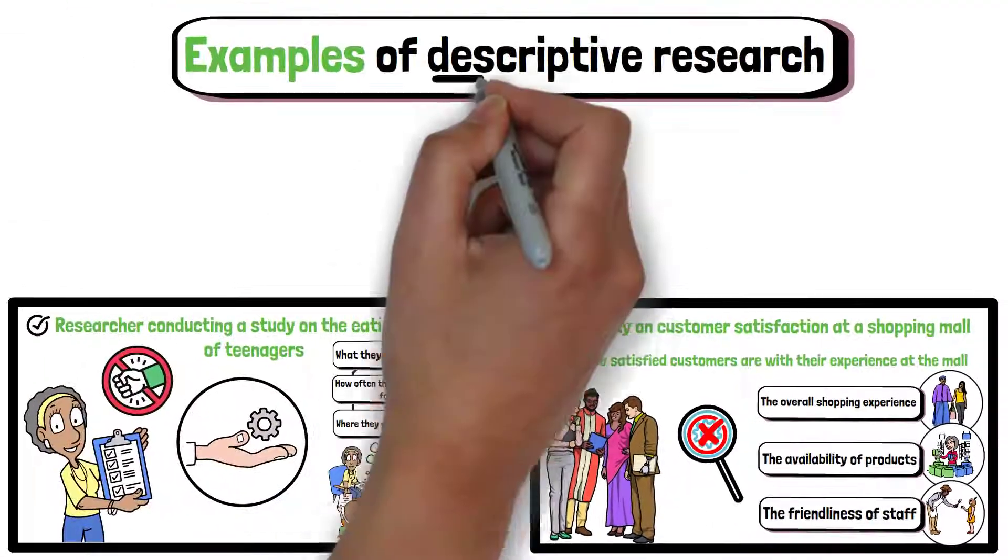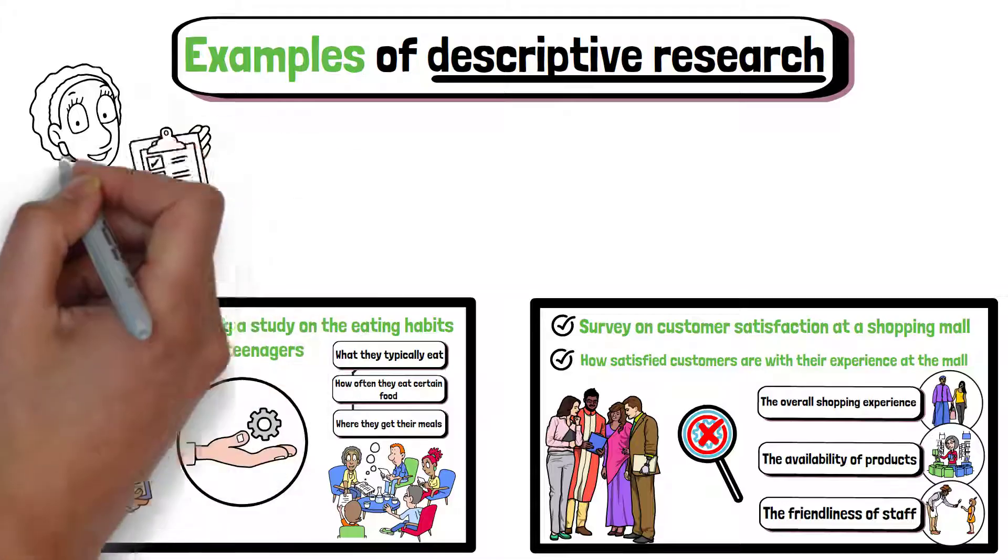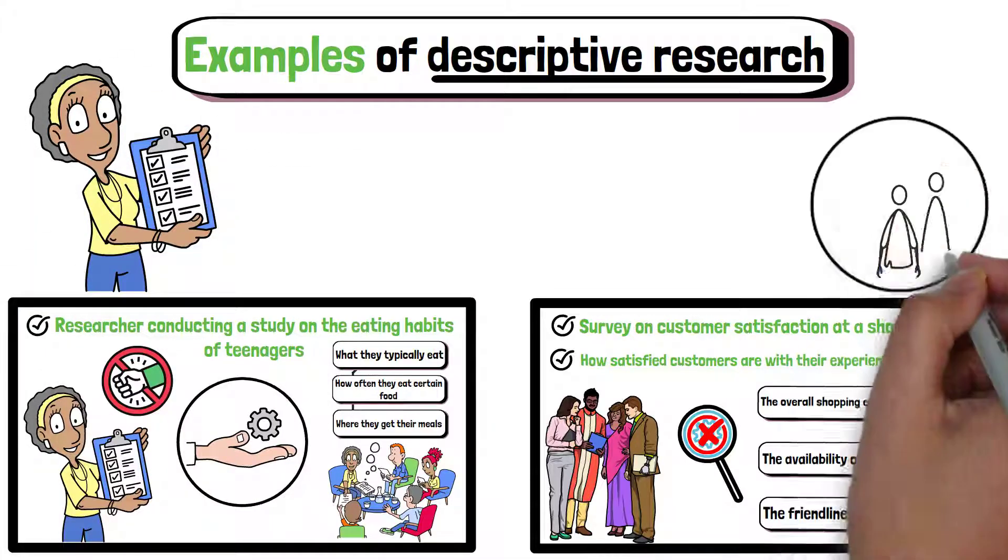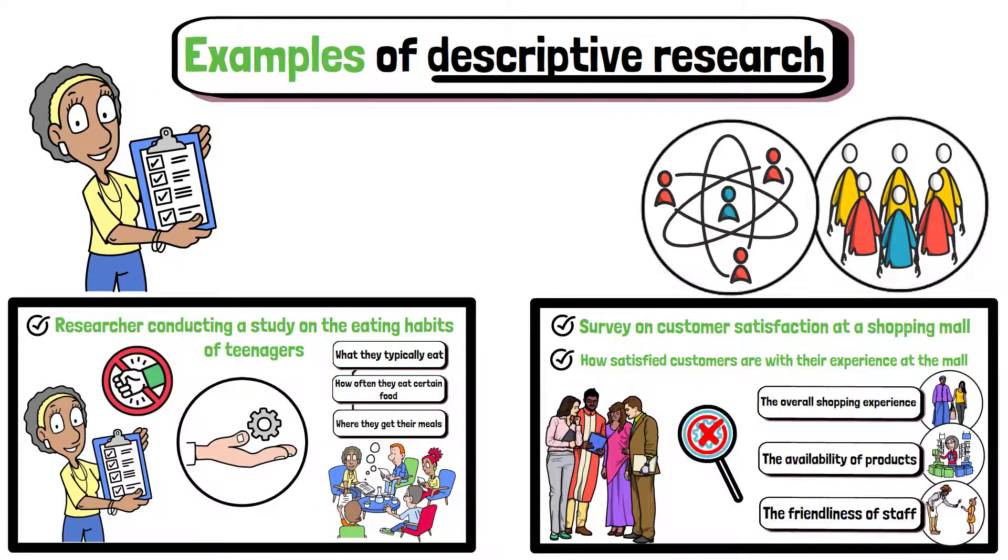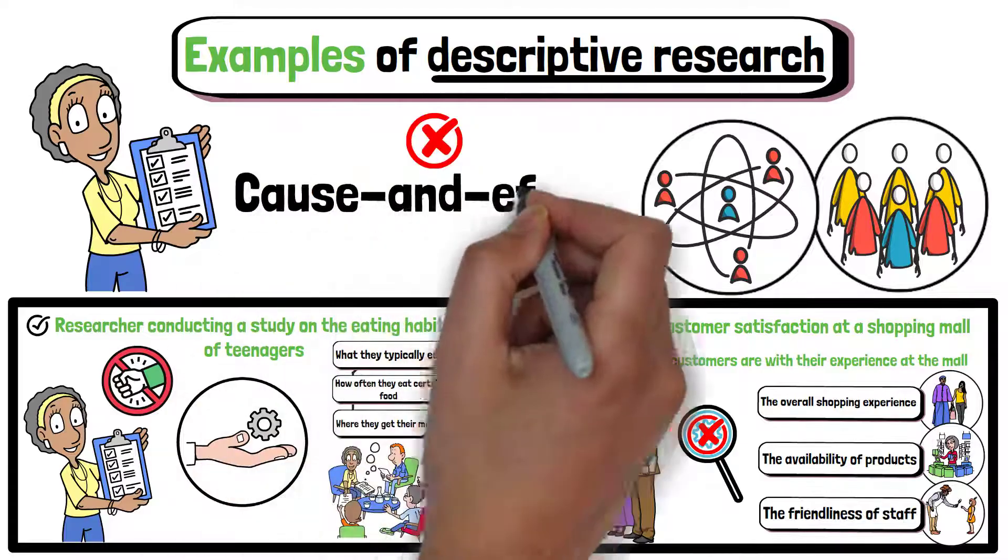In both cases, descriptive research is used to gather detailed information about a population or situation without aiming to test cause and effect relationships.